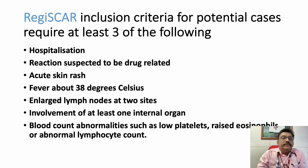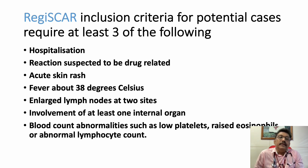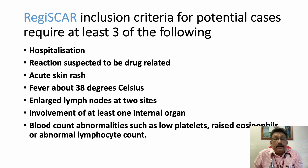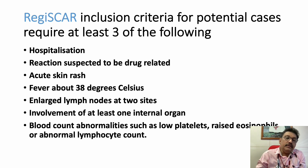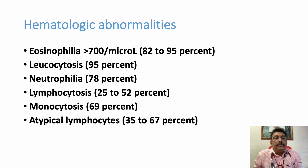Since HHV-6 testing is difficult in many settings, seven out of nine criteria can be used. The RegiSCAR inclusion criteria for potential cases require only three of the following: hospitalization due to drug rashes; reaction suspected to a drug; acute skin rashes; fever; large lymph nodes at two sites; involvement of at least one internal organ; or blood count abnormalities like low platelets, raised eosinophils, or abnormal lymphocyte count.